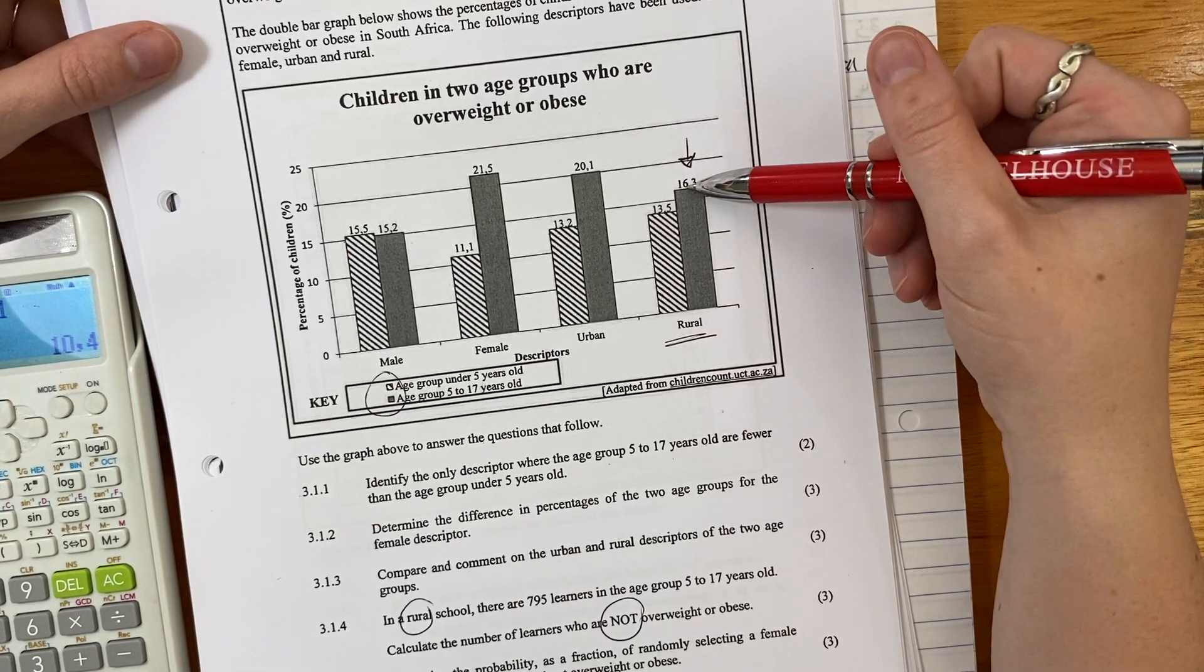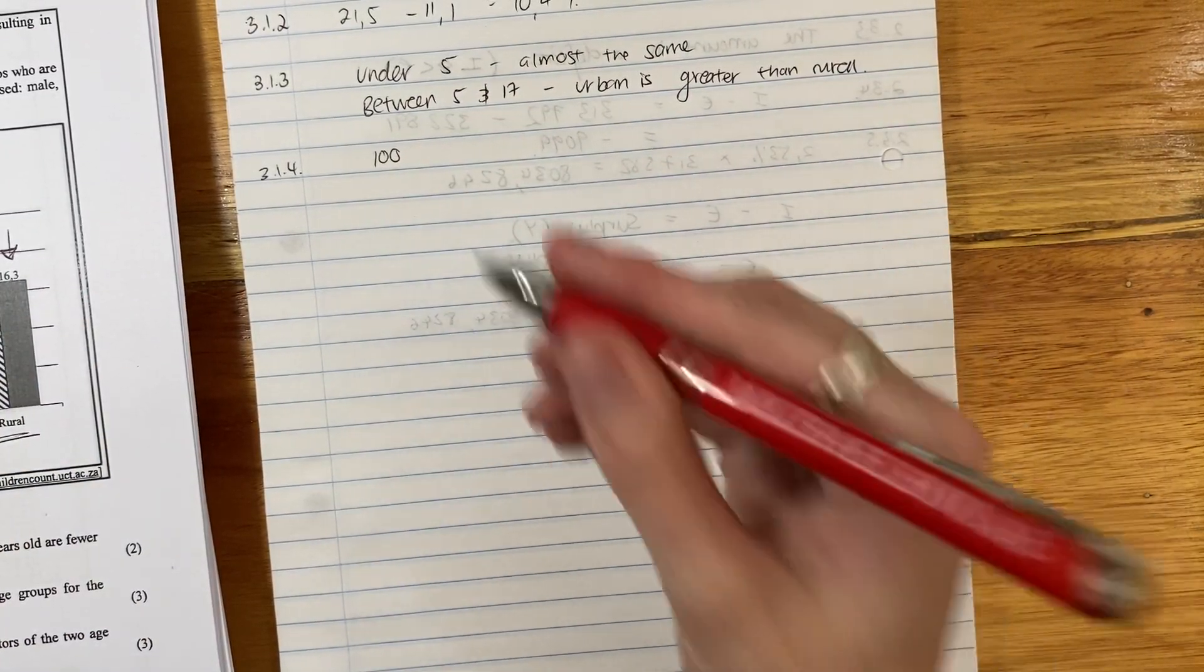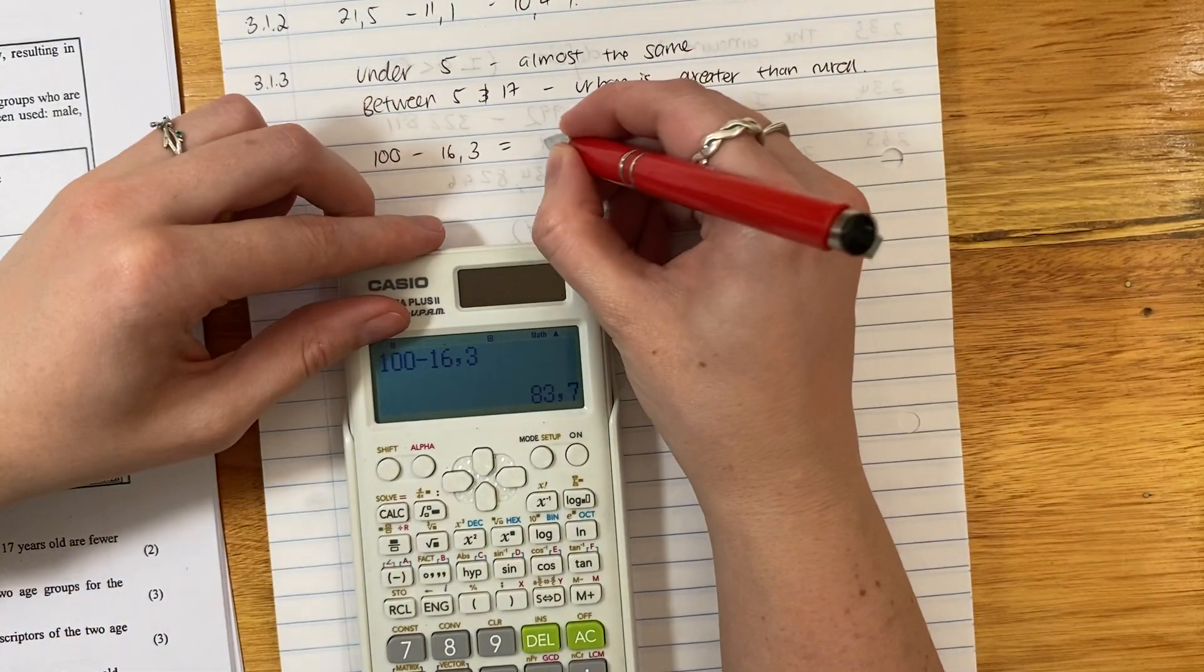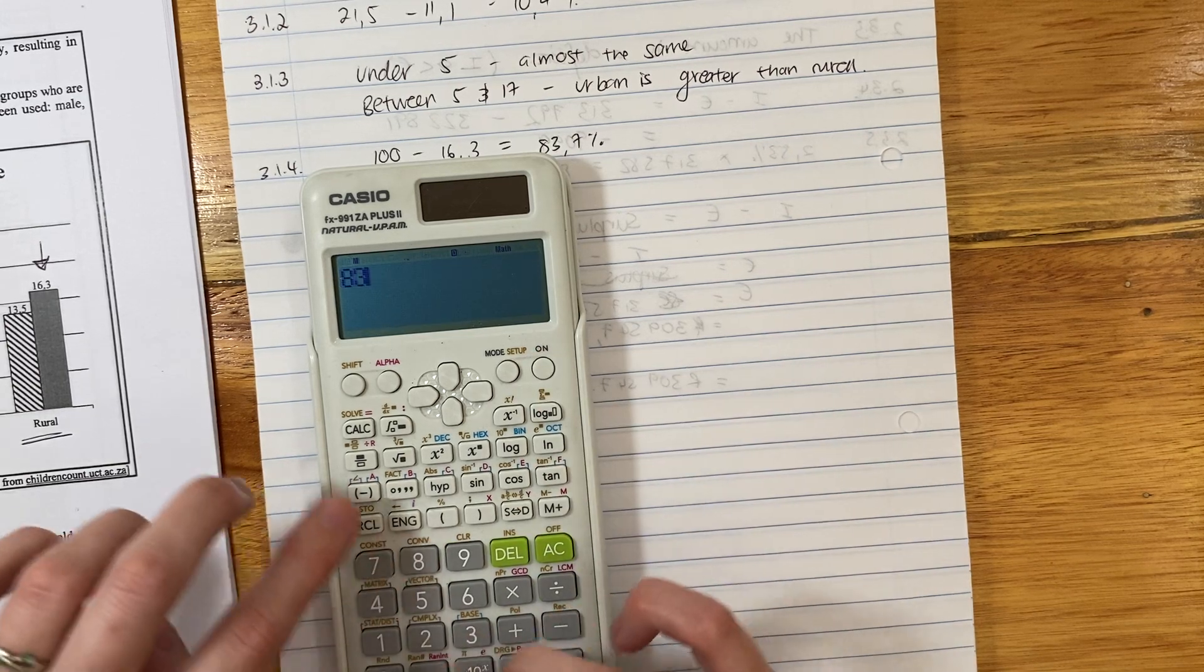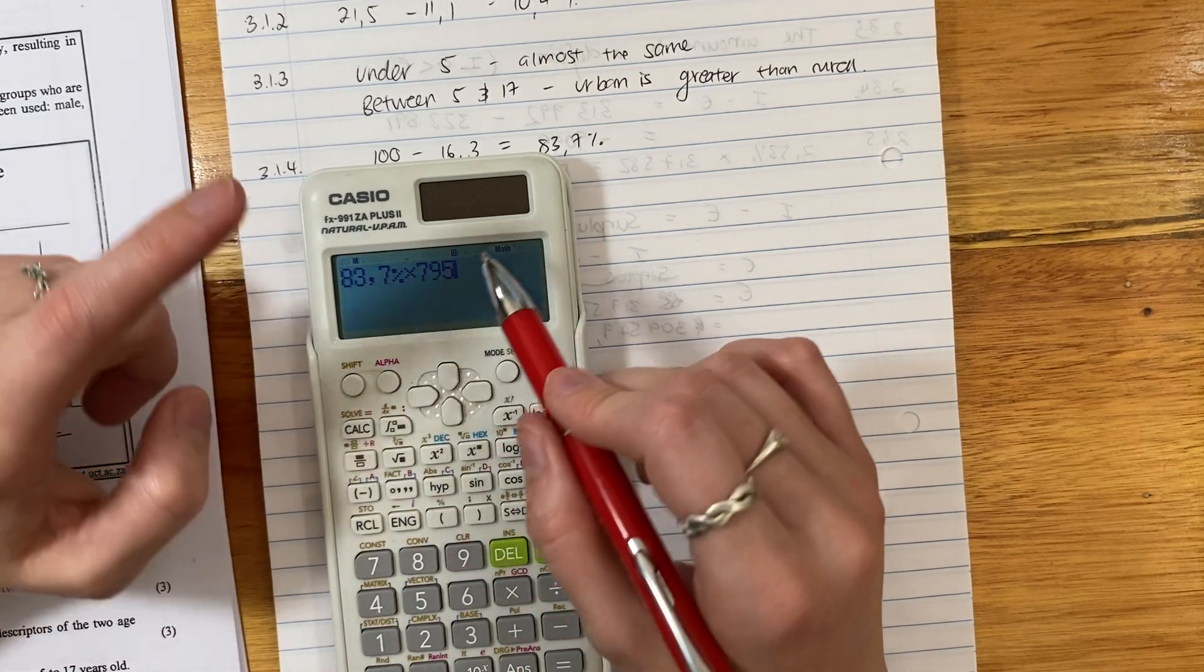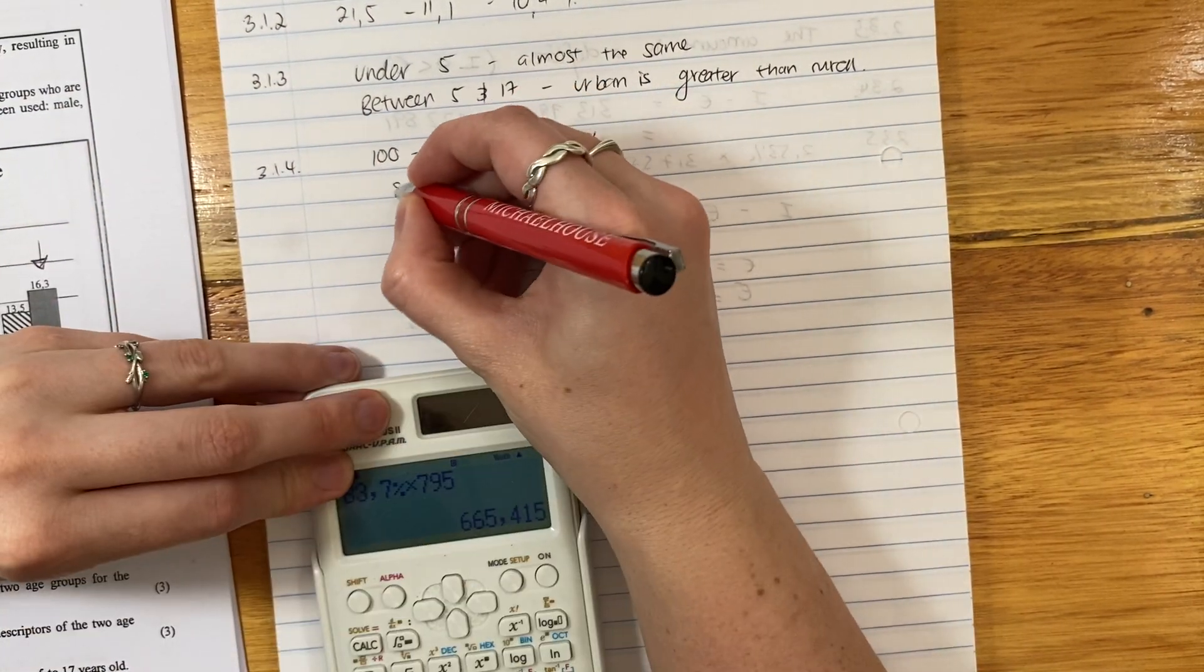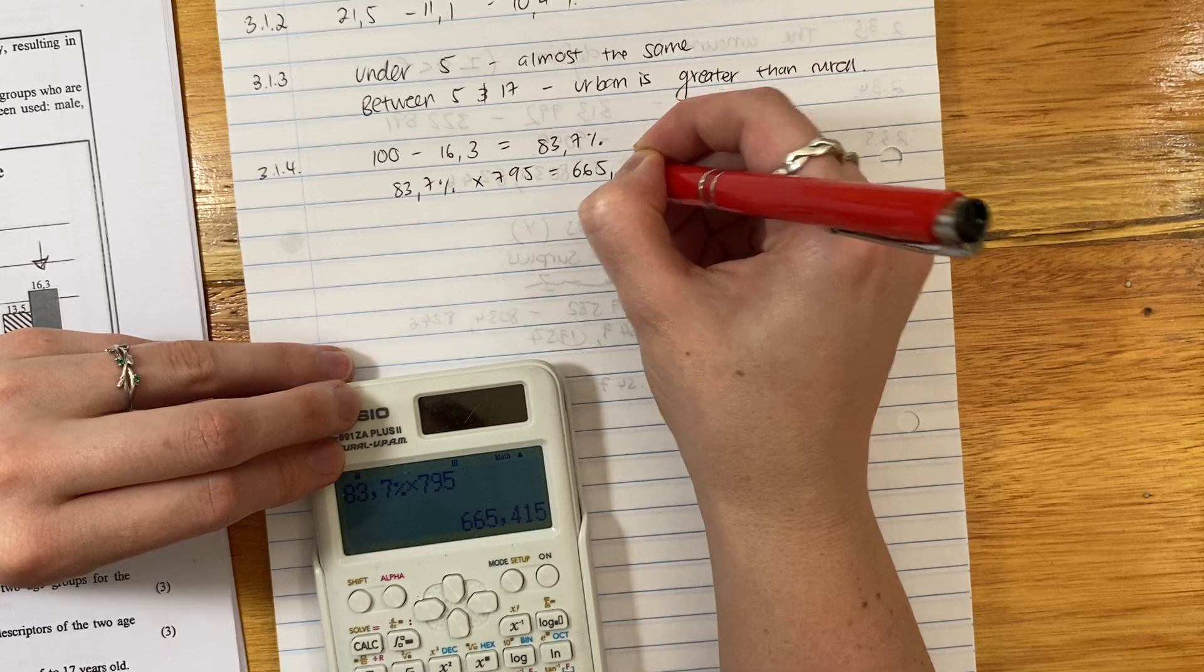So what I'm going to do is I'm going to say, okay, well if 16.3% are overweight, if we are saying 795 is 100%, right? So I'm going to say 100% and minus or subtract the students that are overweight. So this is the percentage of students that are not overweight. Happy? So then you say, okay, well 83.7% and you're going to times it by 795 because you're going to say 83.7% of my learners are not overweight, and my total number of learners is 795. Now obviously, so we're going to say here, let me just make sure I'm writing this down as we're going, and times 795 equals 665.415.